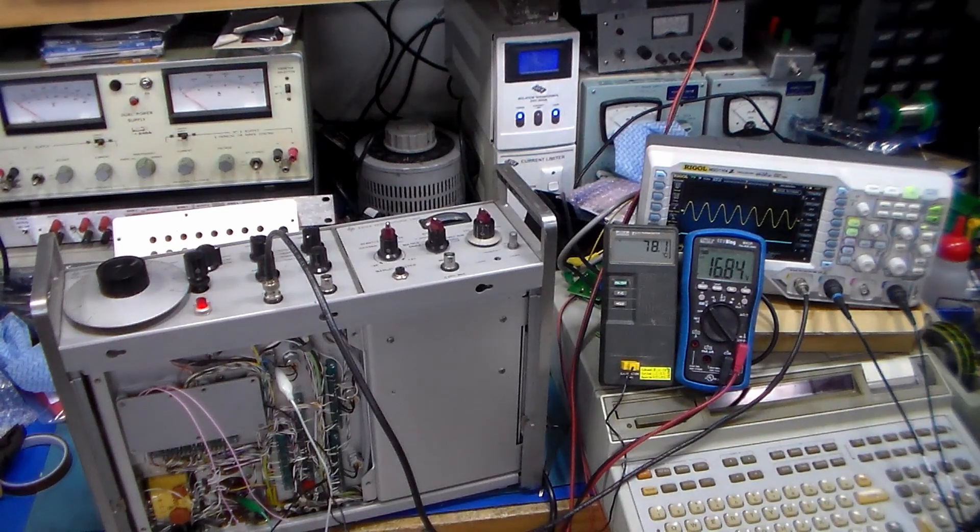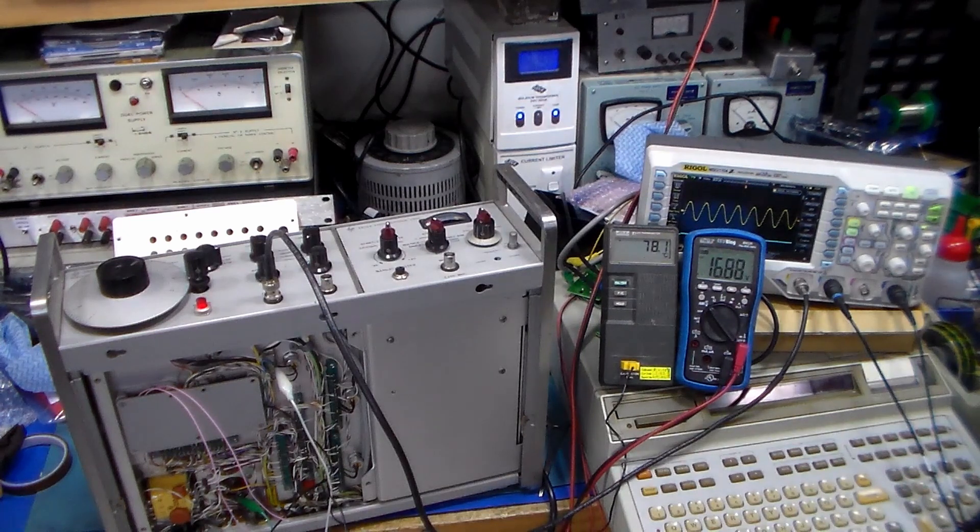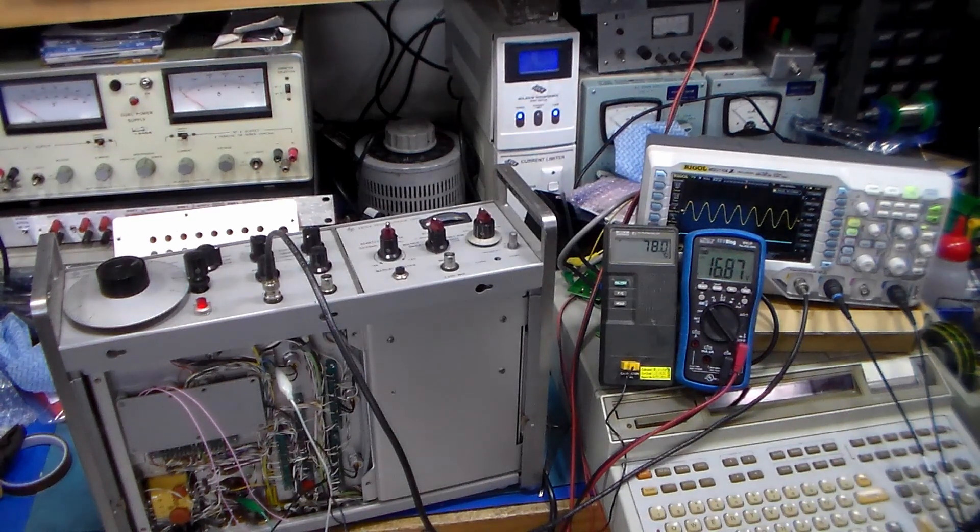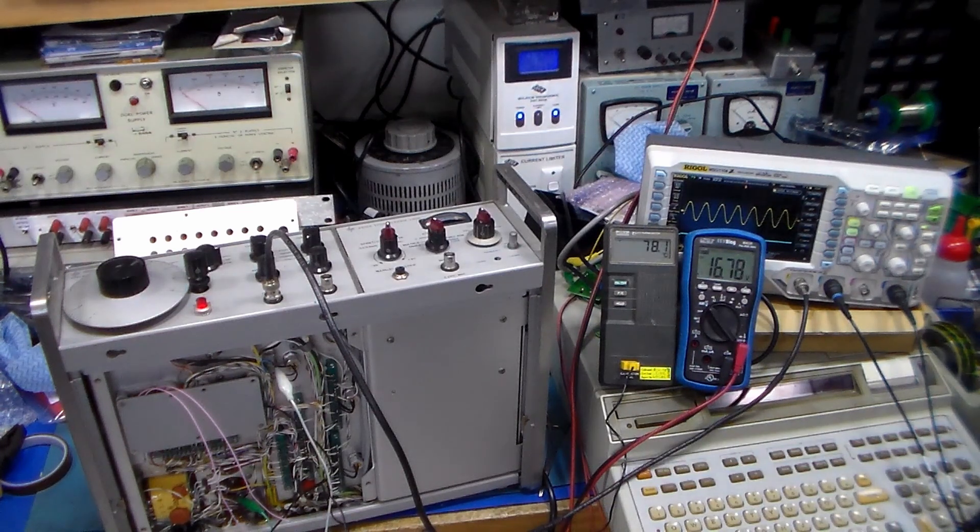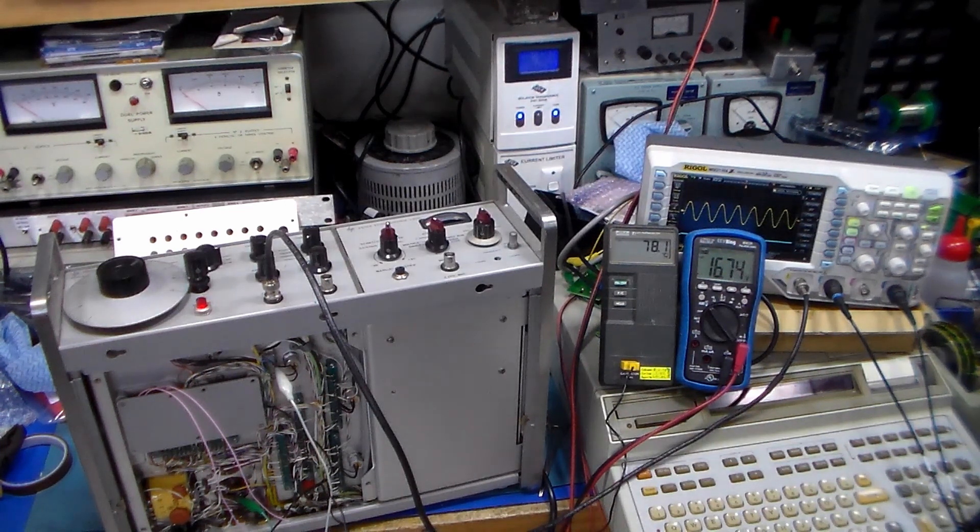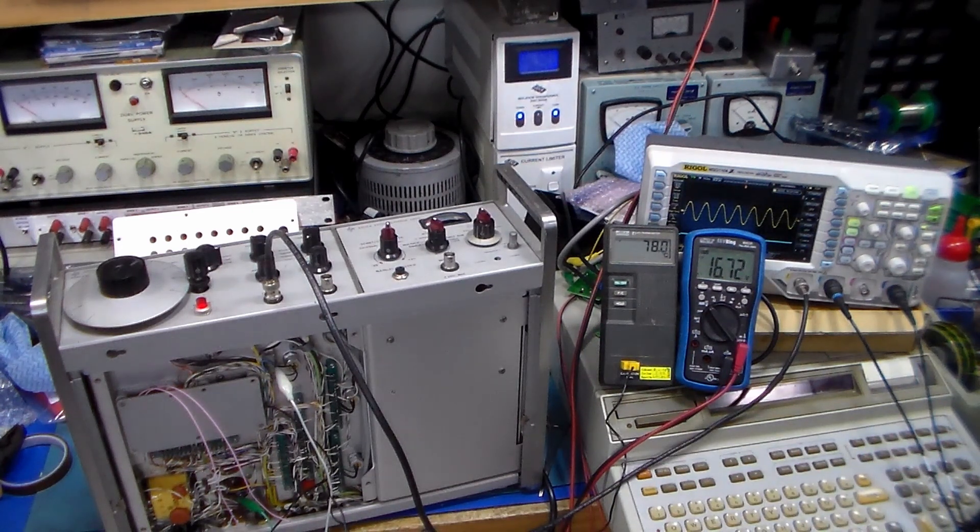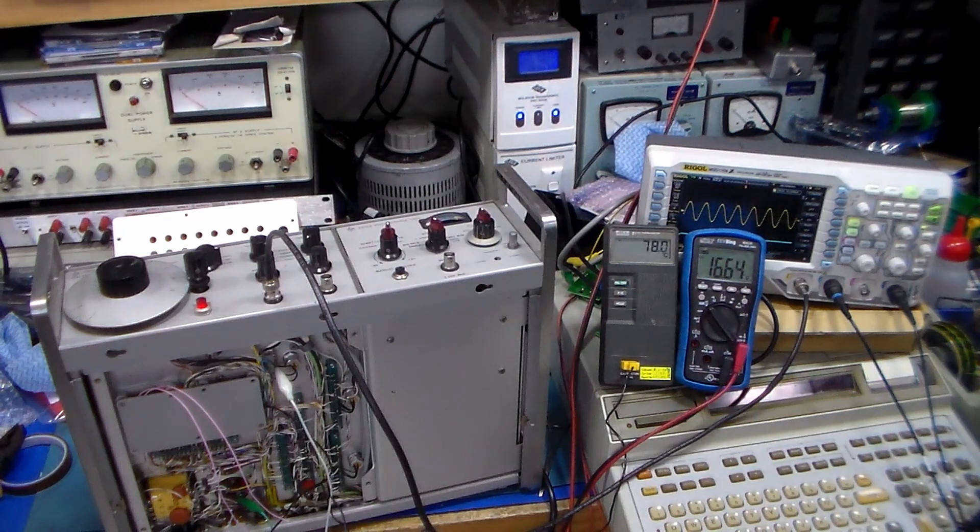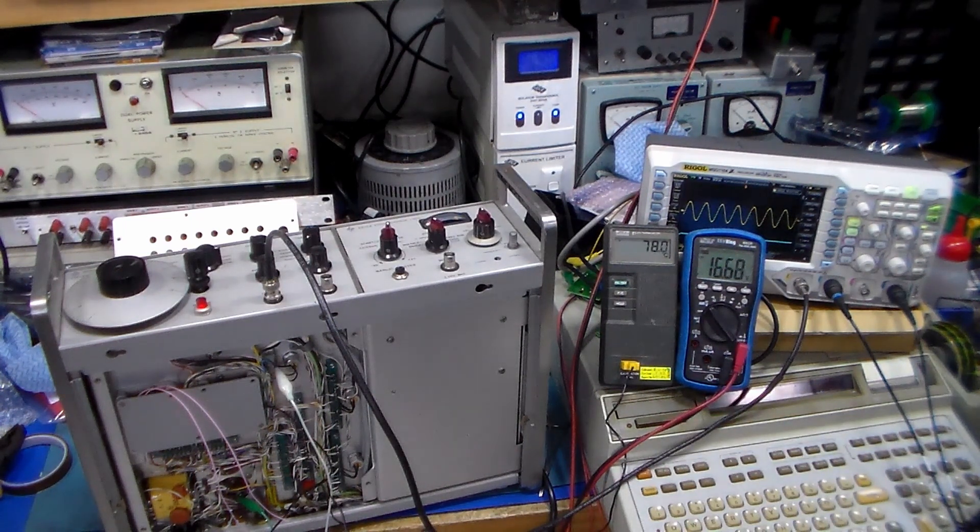A few months ago, Curious Mark did a repair video of his 3300A HP function generator. He had problems with transistors in part of the frequency generation circuit that is contained in the oven. I decided to pull my 3300A out of storage and give it the once over and just check everything out.